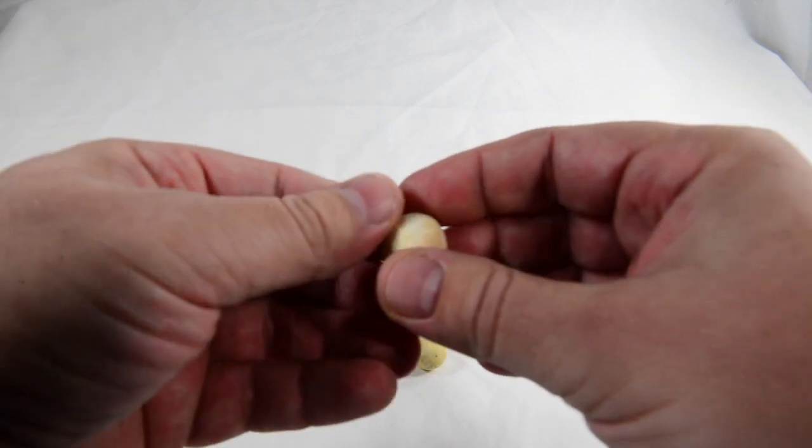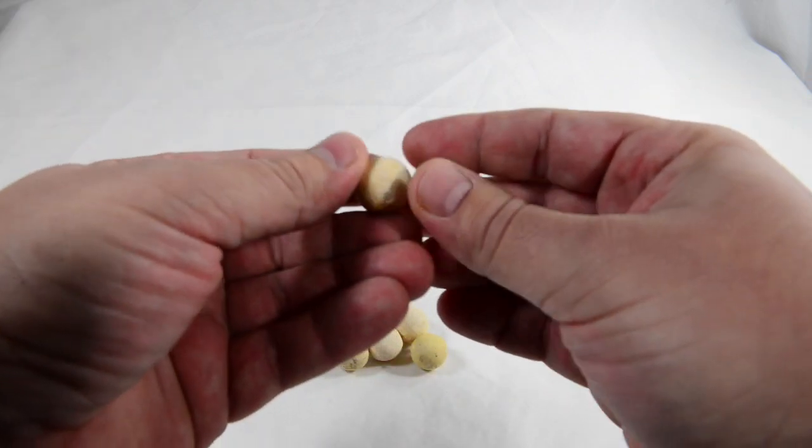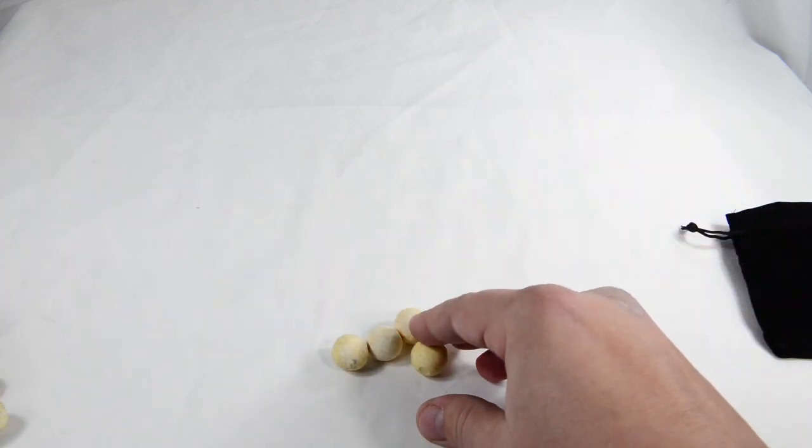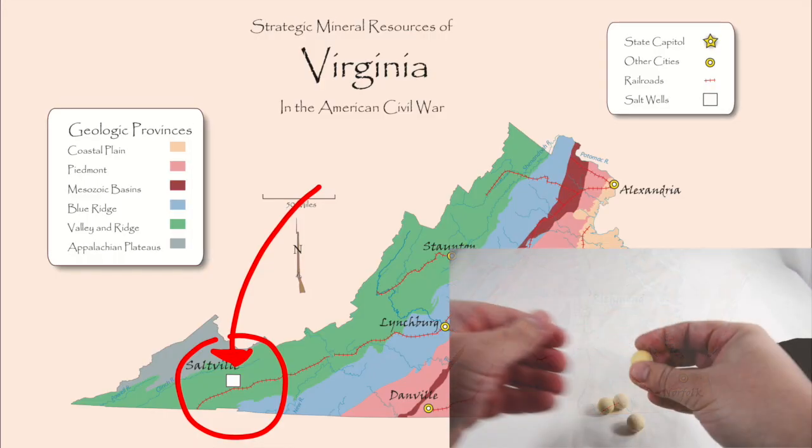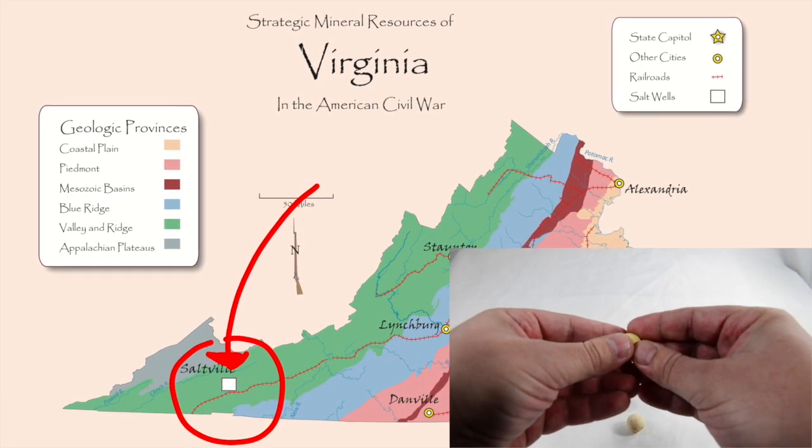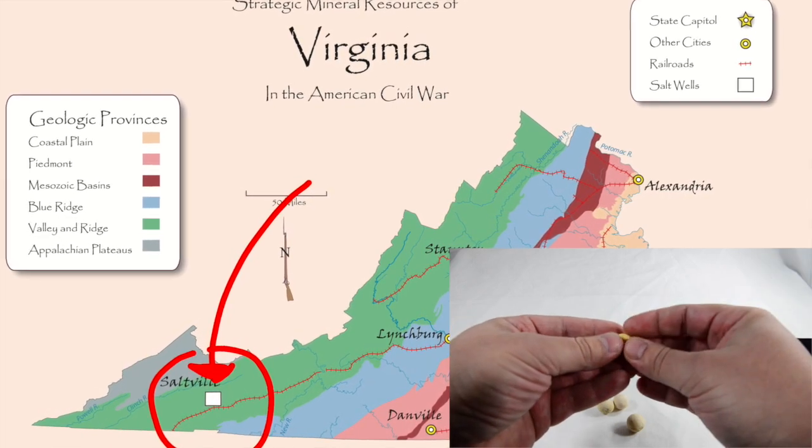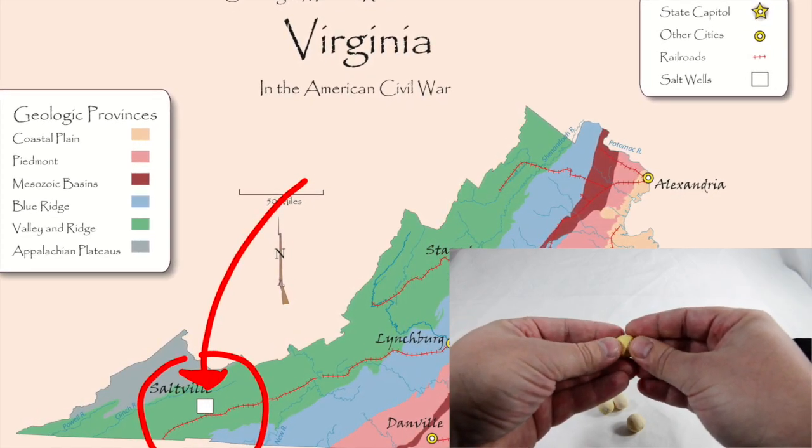Now, Saltville is an interesting little place that some of you may or may not have heard about. It was actually the spot of four battles during the Civil War. The last two took place in 1864, and the second battle saw the Union finally overtake the Saltworks.